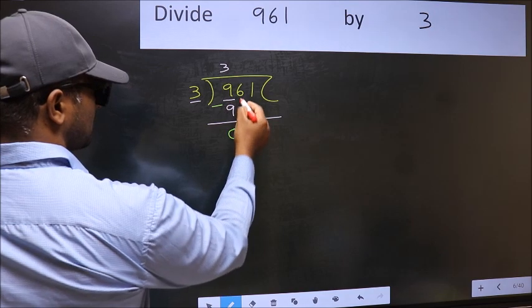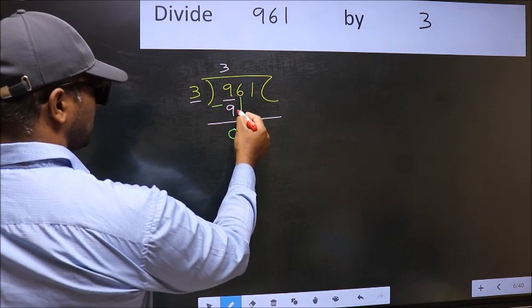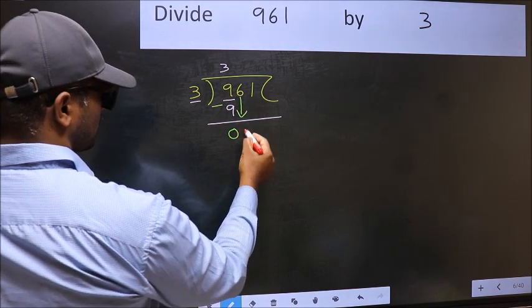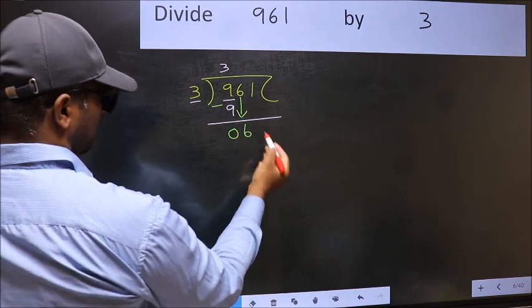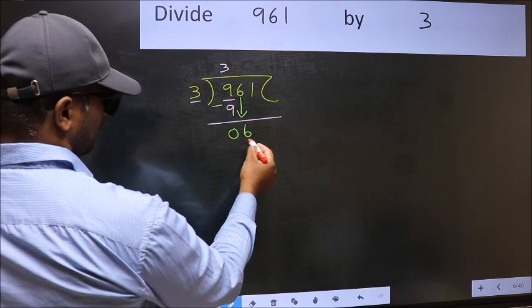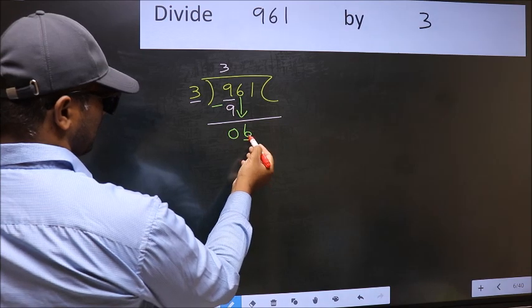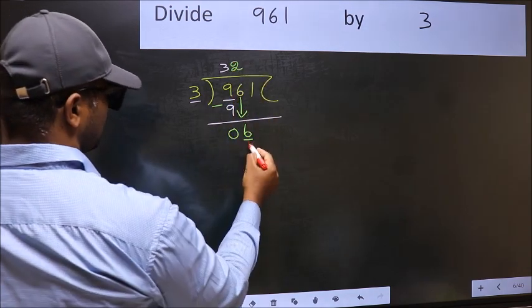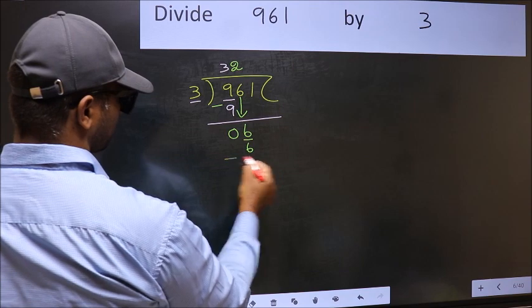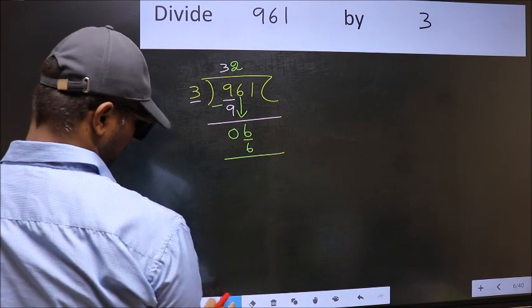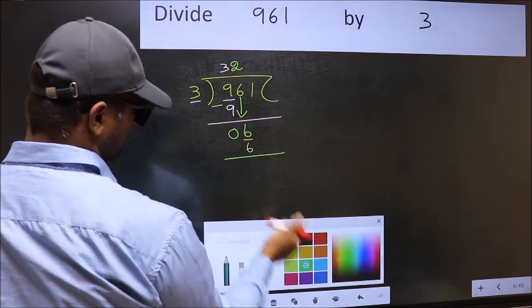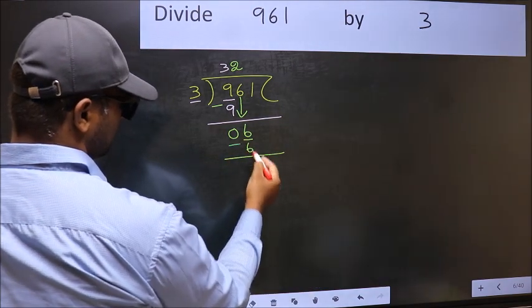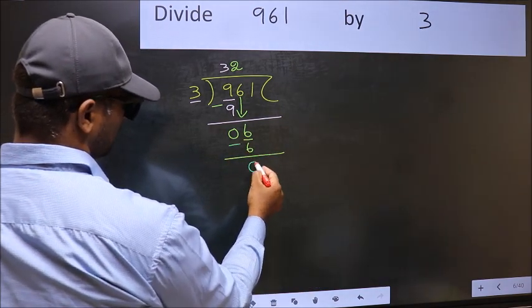After this, bring down the beside number. So 6 down. Now 6 — when do we get 6 in 3 table? 3 2's is 6. Now you should subtract. 6 minus 6 is 0.